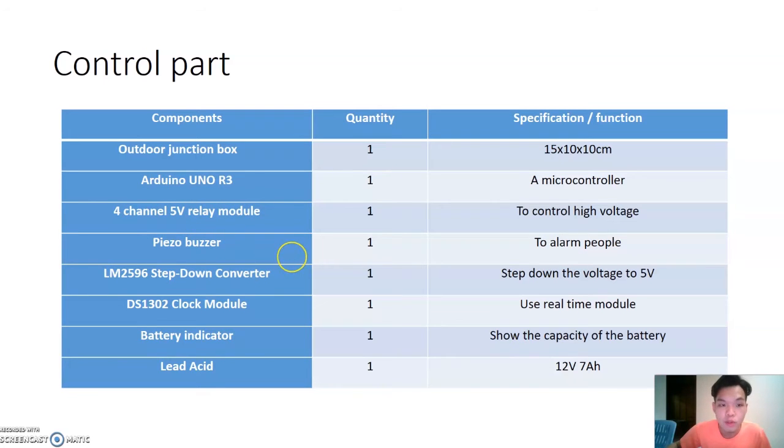So in this project, the microcontroller that we use is Arduino Uno R3. The 4 channel 5V relay module is to control the high voltage. We also use the piezo buzzer to alarm people when the robot is running and people are nearby. So the buzzer will sound to alarm people.